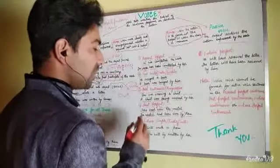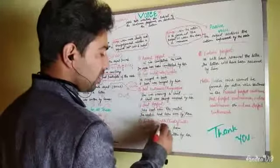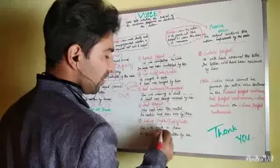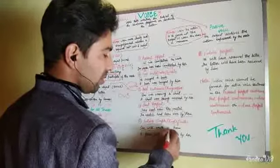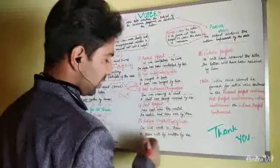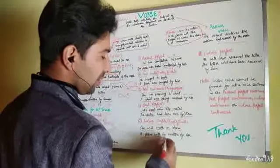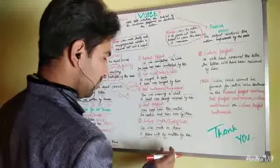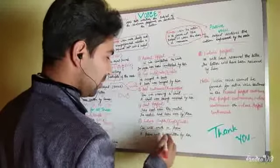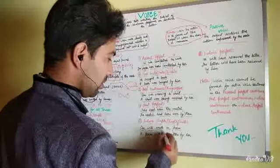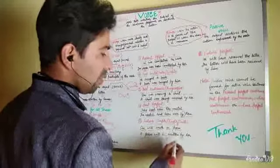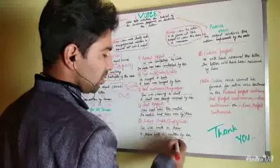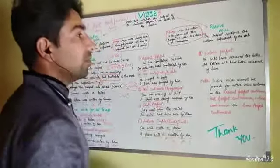There is one tense skipped — past perfect continuous. Now future simple or indefinite: subject + helping verb + verb + object becomes object + helping verb + 'be' + V3 + preposition + subject. For example: 'She will write a letter' becomes 'A letter will be written by her.' The 'will be' is the helping verb structure used in future simple passive, followed by the third form of the verb and preposition.